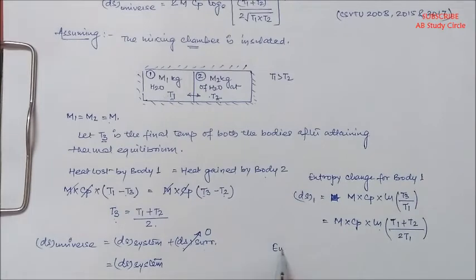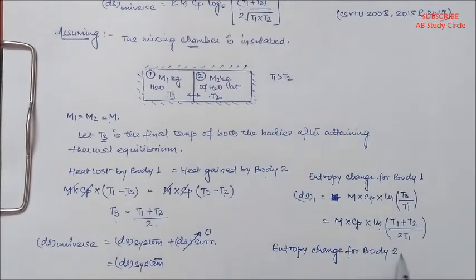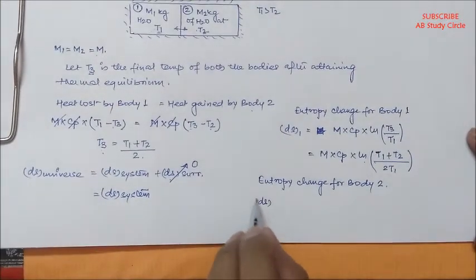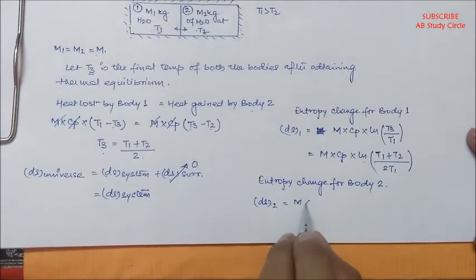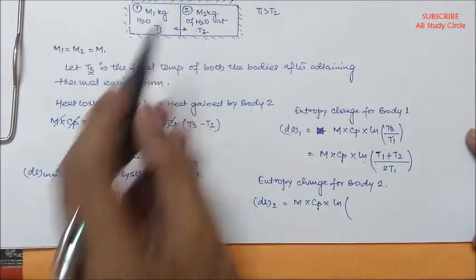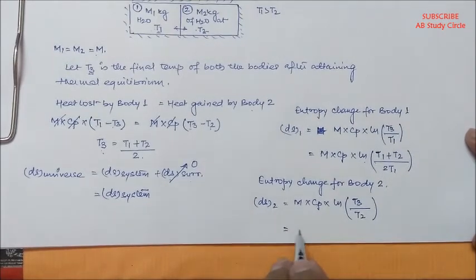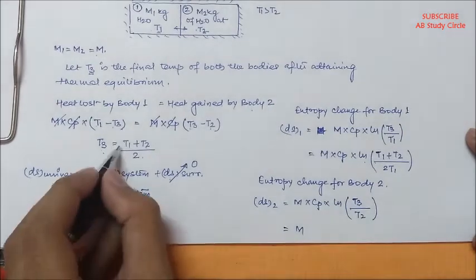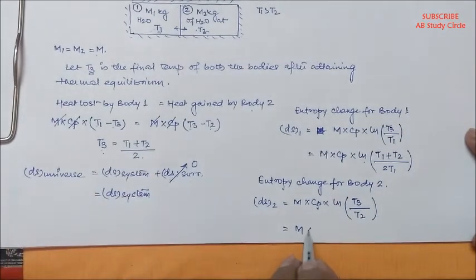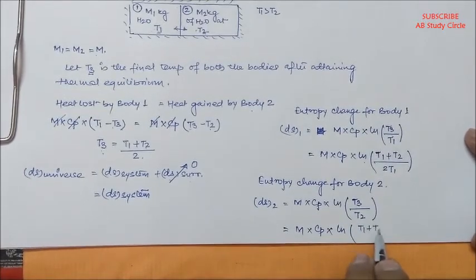Now we have the entropy change for body 2. DS2 equals M into Cp into ln, where the final temperature is T3 again and the initial temperature is T2. Substituting T3 as (T1 plus T2)/2, we get DS2 equals M into Cp into ln[(T1 plus T2)/(2T2)].